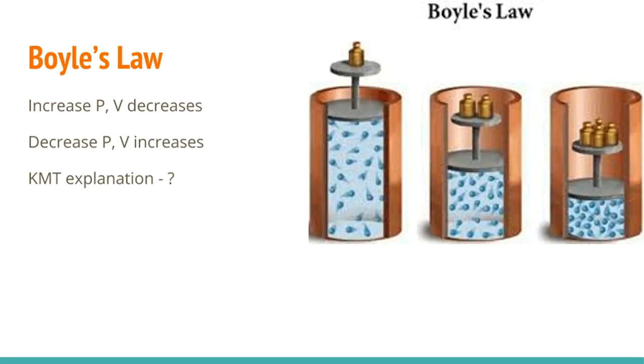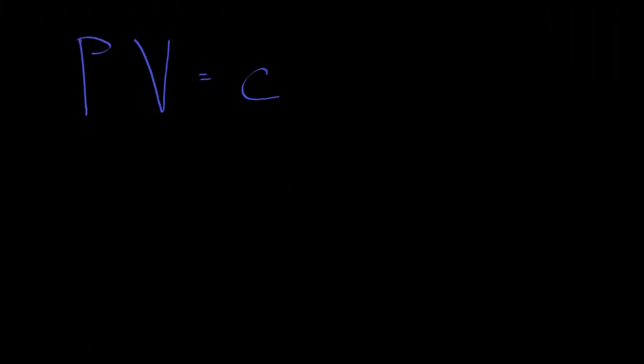What Boyle noticed was that if you increase the pressure on a sample of gas, the volume will decrease. If you decrease the pressure on the sample of gas, the volume will increase. And this is illustrated over on the right. You have a sample of gas trapped inside of a cylinder. There's a piston on top of it. And you can just increase the weight on top of the piston. The more weight, the more the gas gets squeezed down, and the smaller the volume. What Boyle actually noticed was that there is a direct mathematical relationship between pressure and volume. Specifically, that the product of pressure and volume for any particular sample of gas at a constant temperature. That sort of thing is important. Sample of gas, constant temperature, the pressure times the volume is constant.